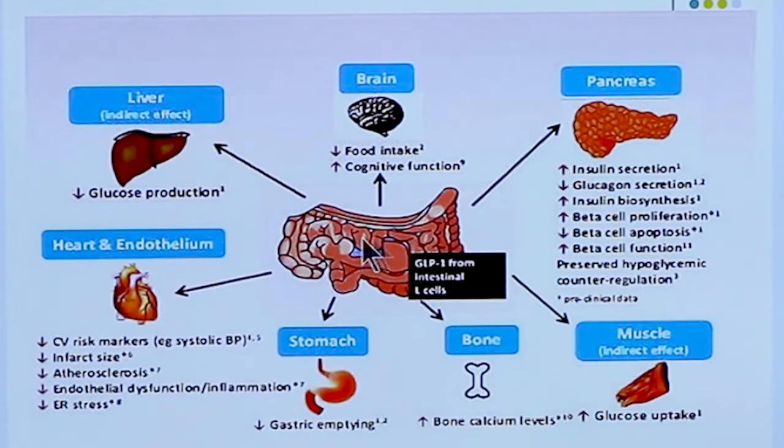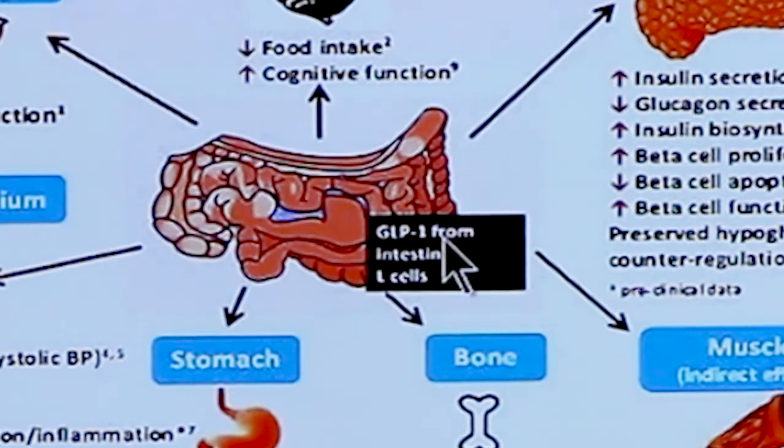They work on the GI tract. The idea is, as soon as we eat, when the food reaches the stomach, the L-cell and the duodenum produce a glucagon-like peptide GLP-1.